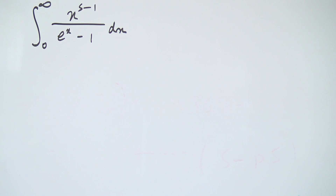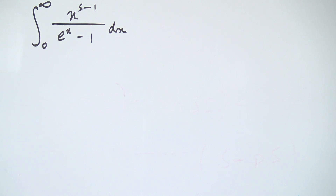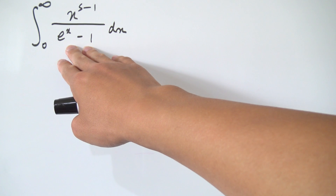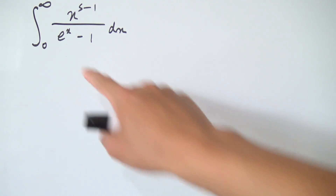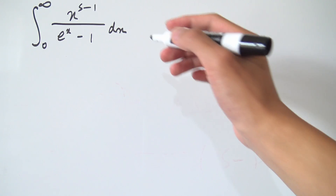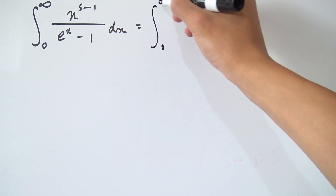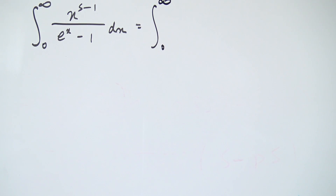So let's try to evaluate this integral. On the denominator we have e to the x minus 1. I want to somehow turn this into a geometric series, because for a geometric series we want 1 minus something. In order to achieve that, I'm going to multiply the top and the bottom by e to the minus x.